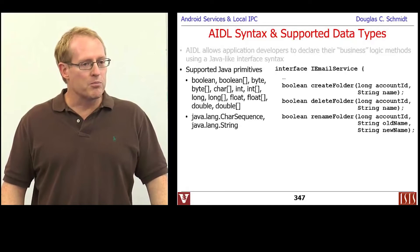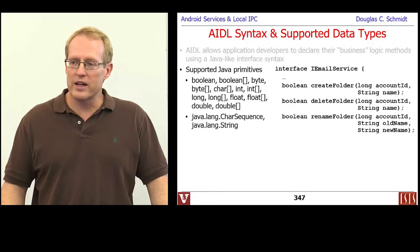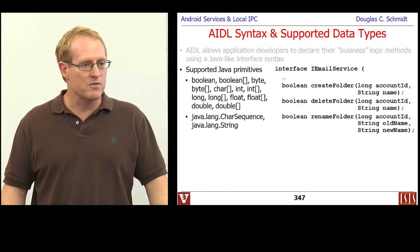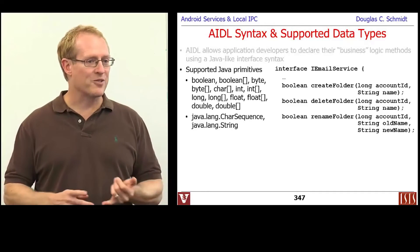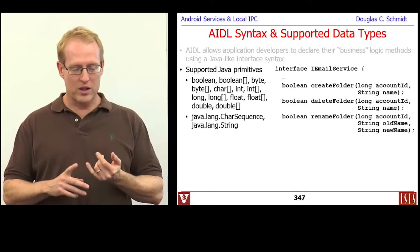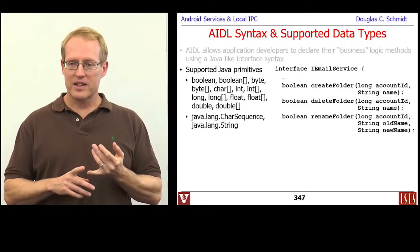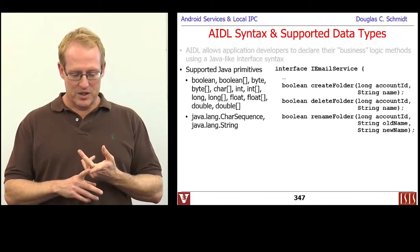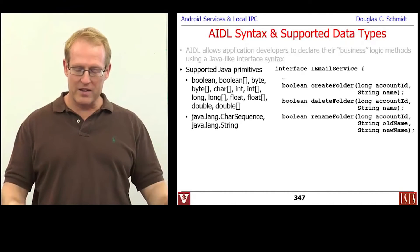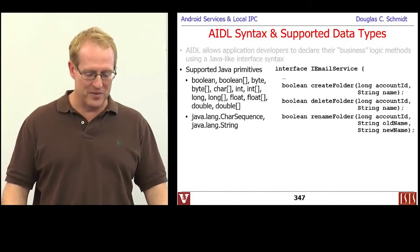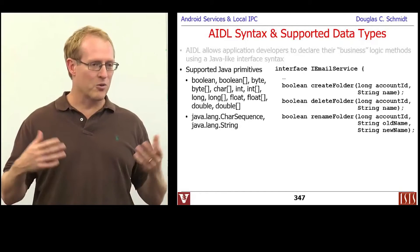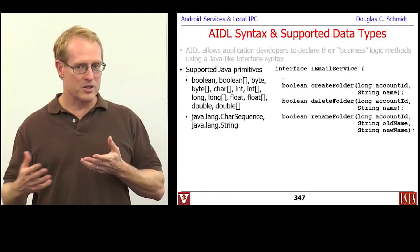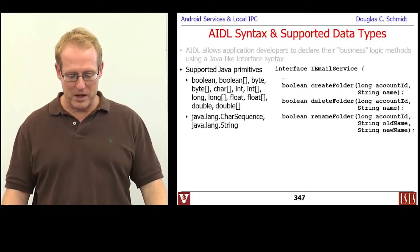There are a number of primitive data types supported as parameters or return values from AIDL methods in Android. The typical things you'd expect: bool, array of bool, byte, int, array of int, long, array of long, char, array of char, float, array of float, double, array of double, etc. Those are all the kinds of things that you can pass back and forth.